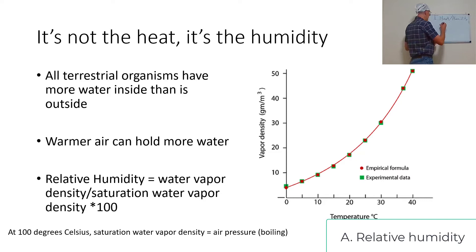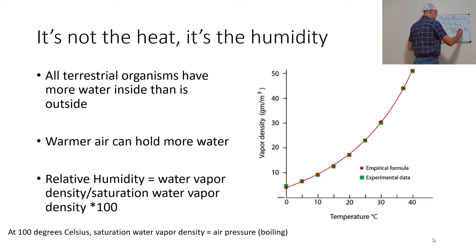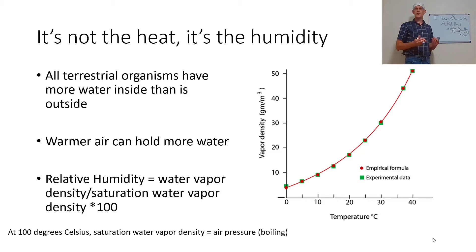Relative humidity equals the water vapor density divided by the saturation water vapor density times 100. So if I say it's 20% relative humidity, what that means is the water vapor that's present is 20% of the water vapor that could be present.